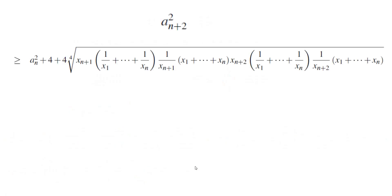So here's what we get. AN plus 2 squared is greater than or equal to AN squared plus 4 plus 4 times the 4th root of this expression. This expression inside simplifies and we get AN squared here and then AN squared here. So the whole thing becomes AN.